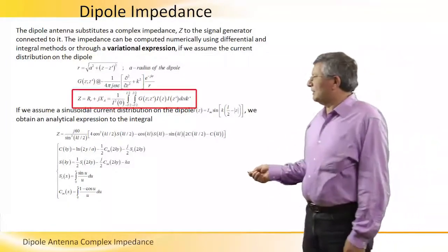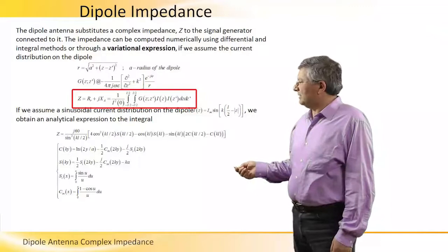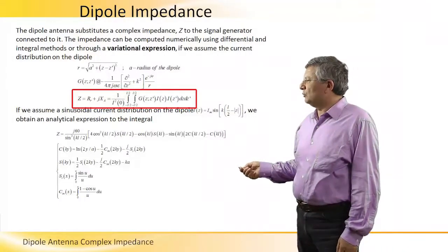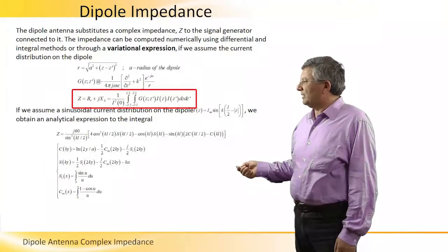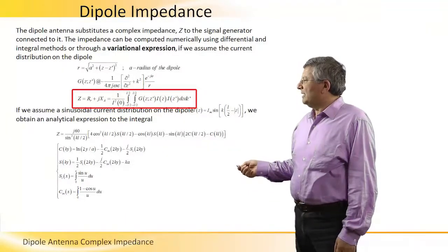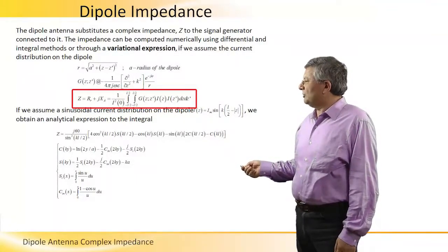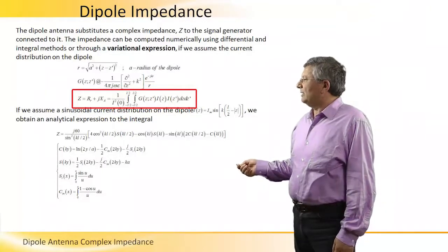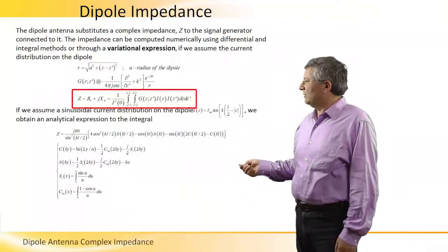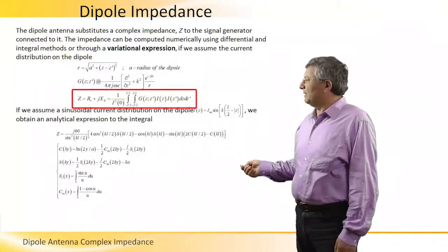The expression for the complex impedance Z, which equals the real part of the impedance plus the imaginary part of the impedance, Xa, is equal to this integral, in which G is a kernel with the derivative of e to the minus jkr over r, multiplied by the current distribution.